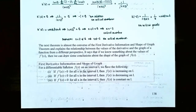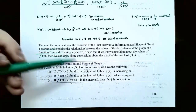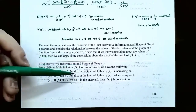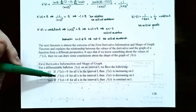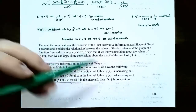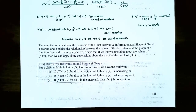The next theorem is almost the converse of the previous result. It says that if we know something about the values of the derivative, we can draw conclusions about the shape of the graph of f(x). For a differentiable function f(x) on an open interval: (1) if f'(x) > 0 for all x on an interval, then f is increasing there; (2) if f'(x) < 0, then f is decreasing; (3) if f'(x) = 0 for all x on an interval, then f is constant there.